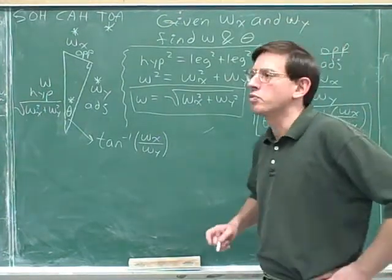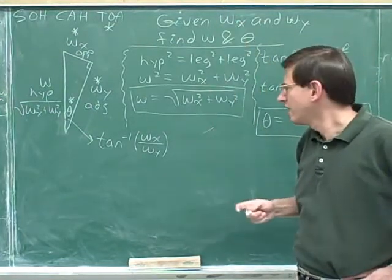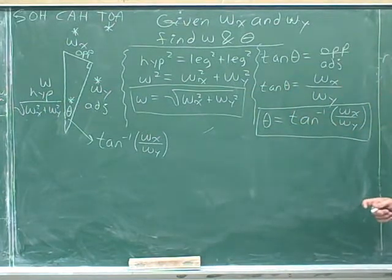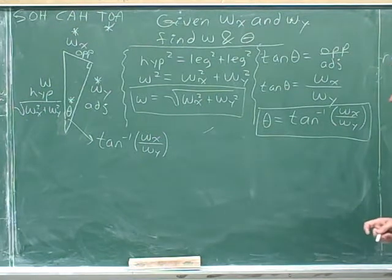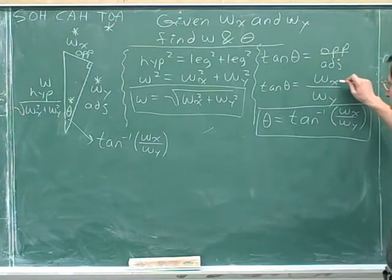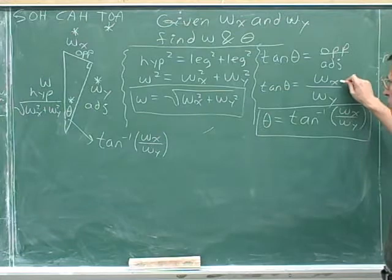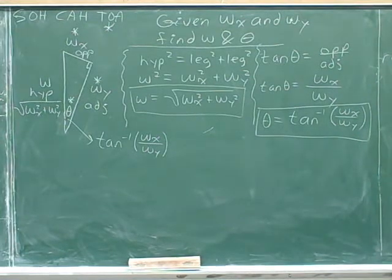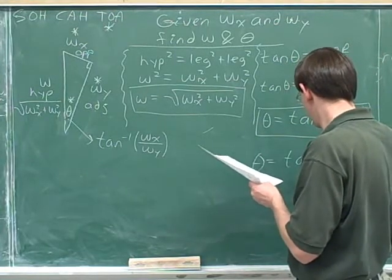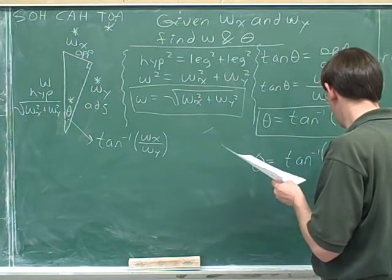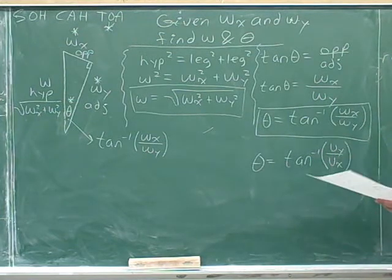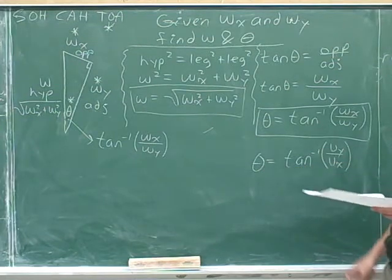Now we've done two problems in a row, where we were given not numbers, but variables. Maybe you can compare this problem to the one that we did before. One thing you might notice is that on the previous problem, we ended up putting the x component on the bottom of this fraction and the y component on the top. I'm just going to remind you of what we got in the previous problem. If you look back to your notes for the previous problem, that was about v's, not w's. And we got this expression for the previous problem, v sub y over v sub x.